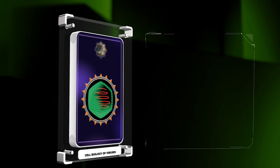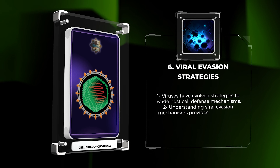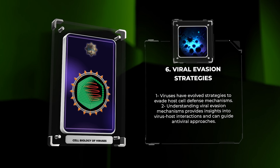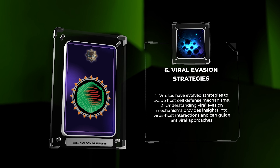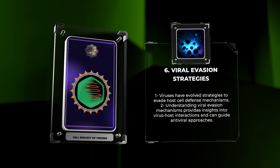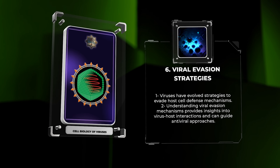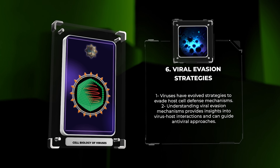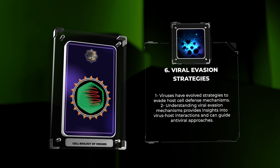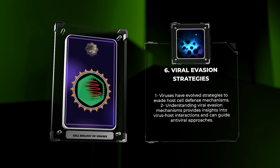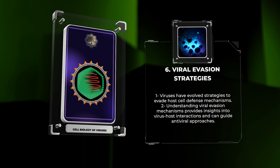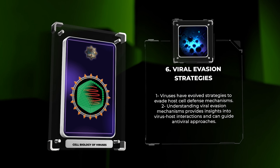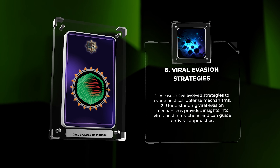Despite host cells' robust antiviral defense mechanisms, viruses have evolved numerous strategies to evade or subvert these defenses and establish productive infections. For example, viruses may encode proteins that inhibit the production or activity of antiviral signaling molecules. They may also utilize various mechanisms to evade immune recognition, such as antigenic variation or interference with antigen presentation. Moreover, viruses can exploit host cellular processes to facilitate their replication and spread while avoiding detection. Unraveling the mechanisms of viral evasion offers valuable insights into virus-host interactions and can guide the development of novel antiviral approaches.